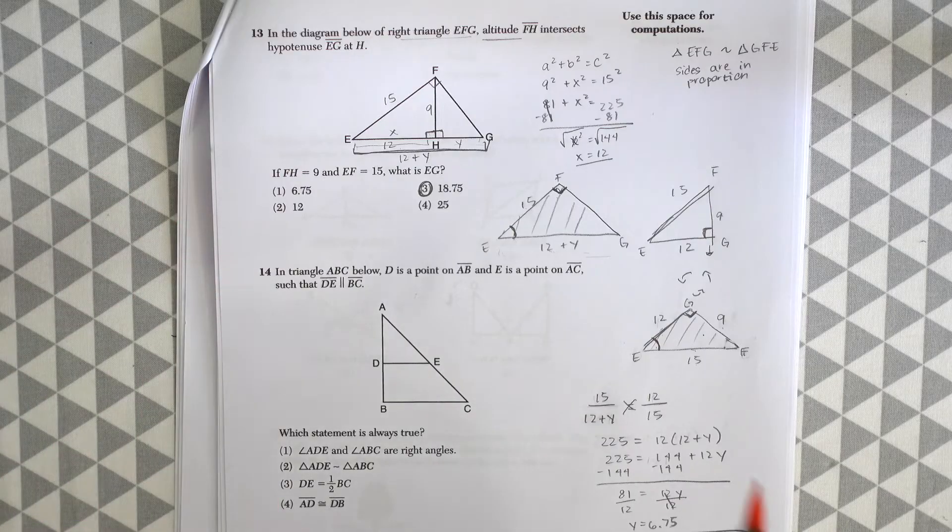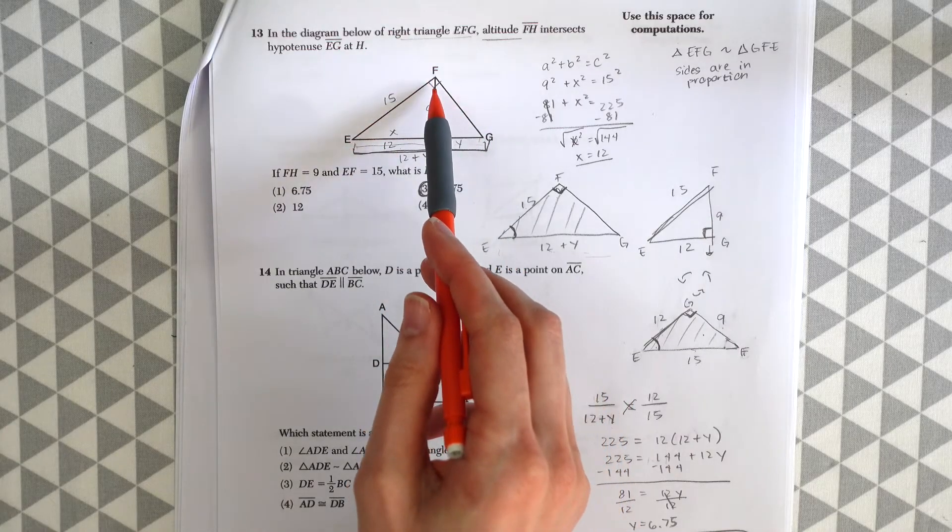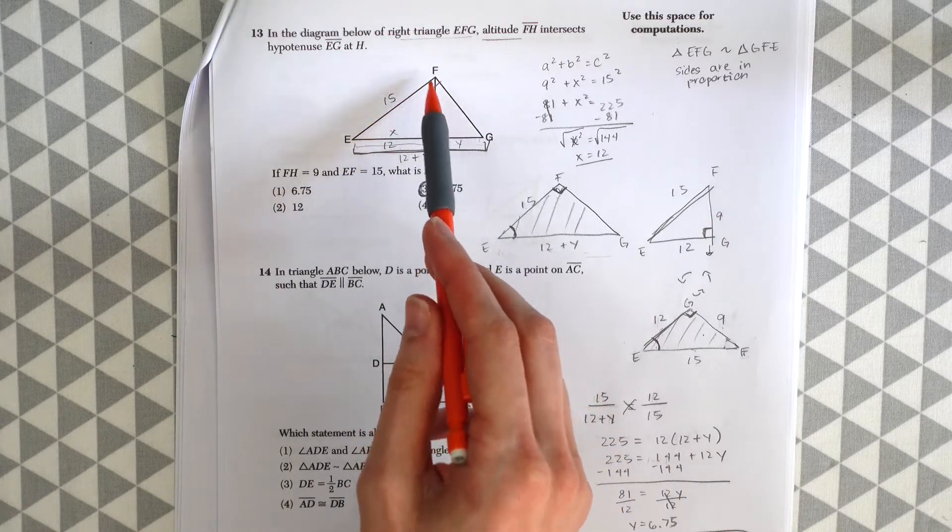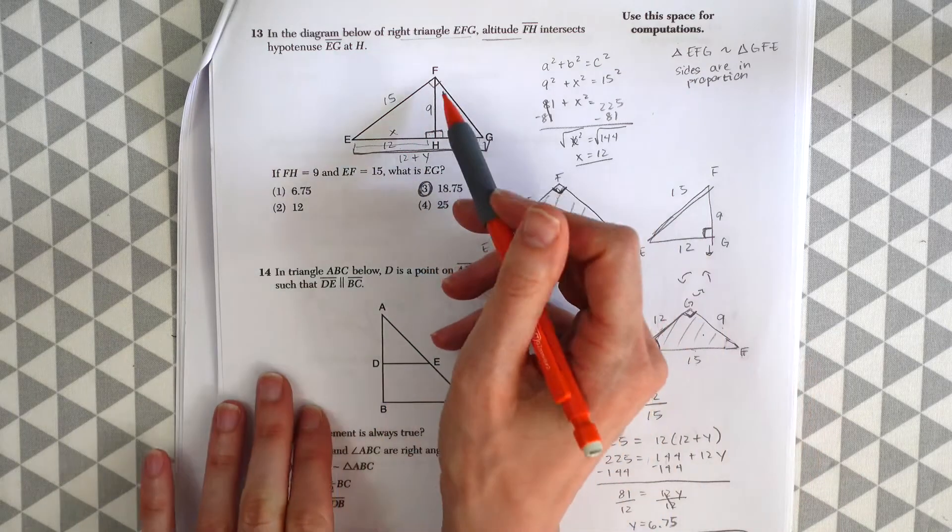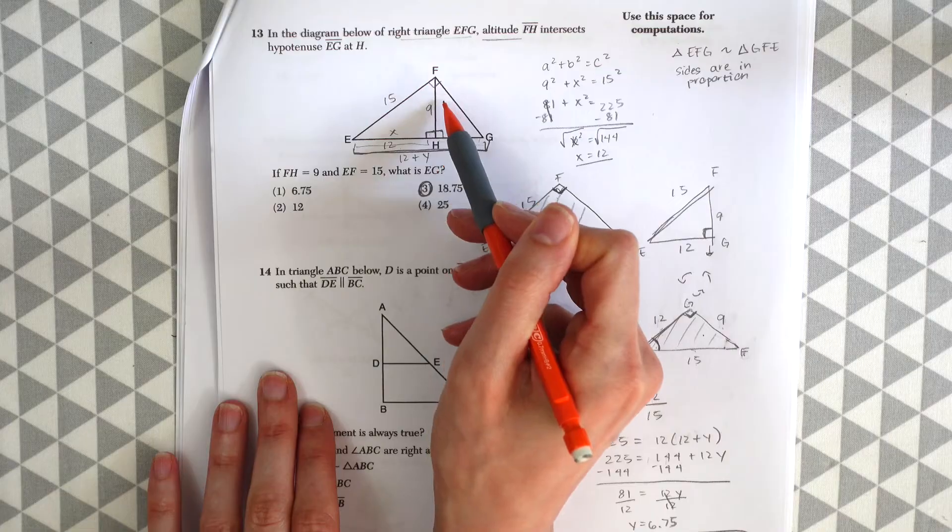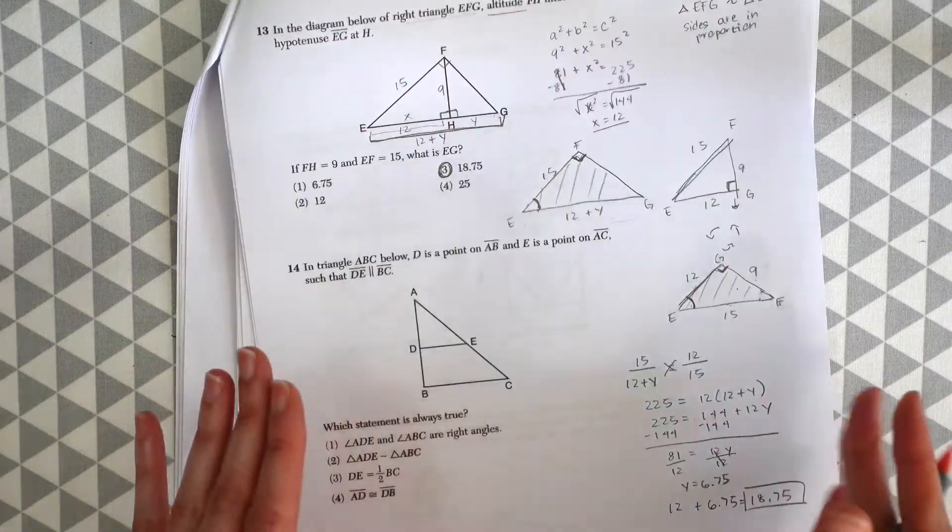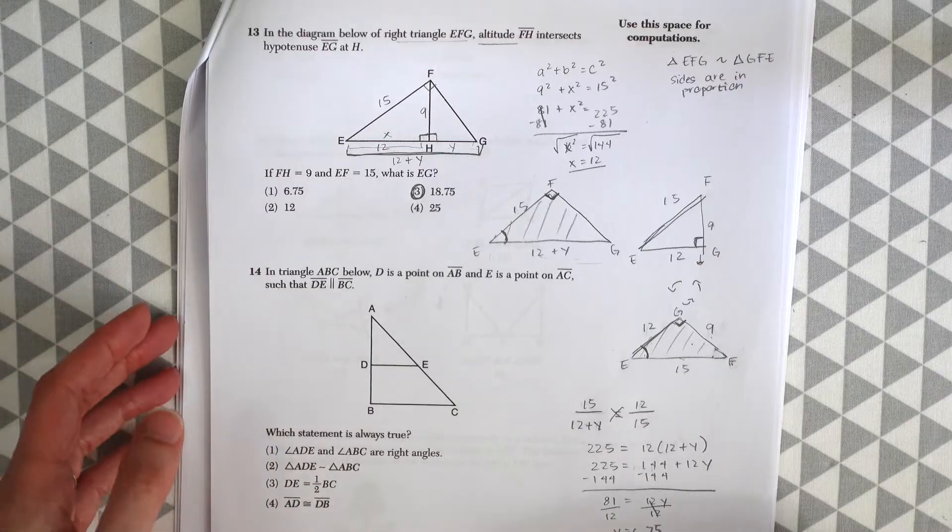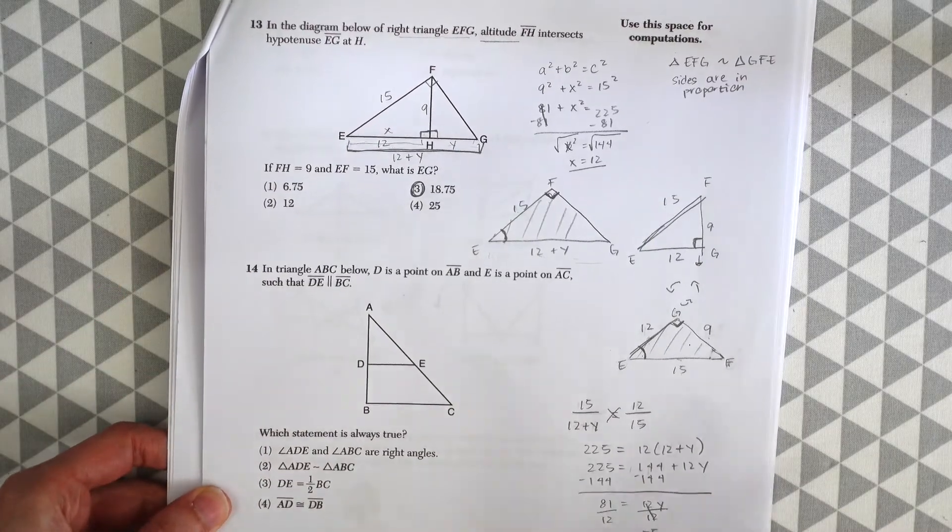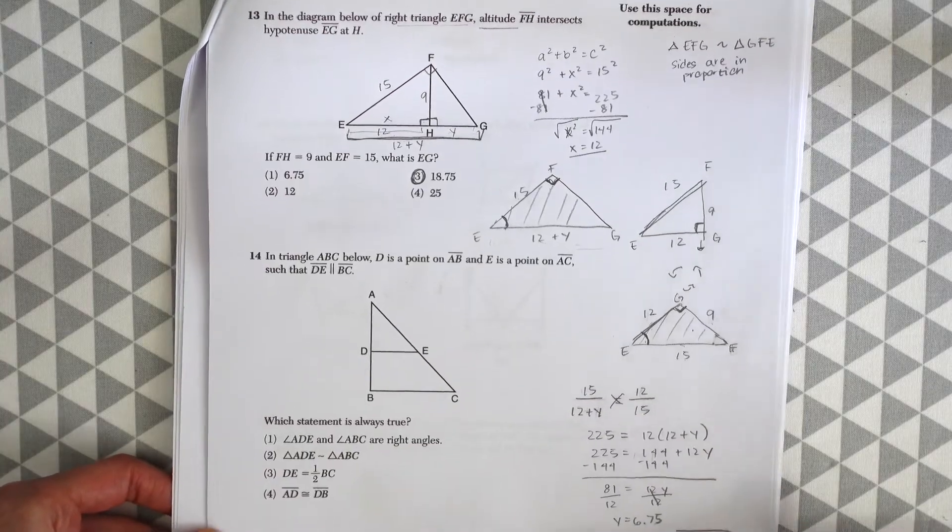So this one's tricky, but just practice these kinds of questions. These come up a lot where there's a triangle with three triangles. So there's the first triangle on the outside and then a triangle on the left and a triangle on the right. And they're always similar to each other, and they're always going to involve some kind of proportion. So it's tricky and takes a lot of steps, but just be on the lookout for those because they come up a lot.